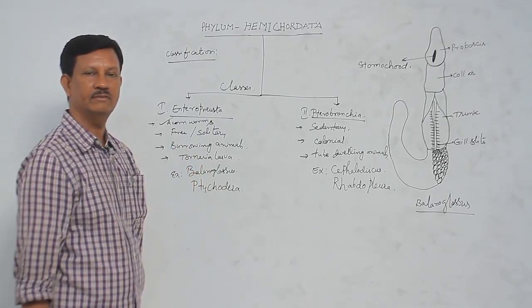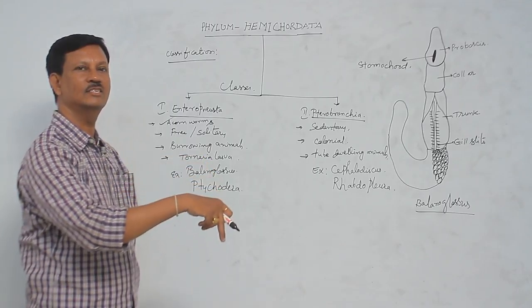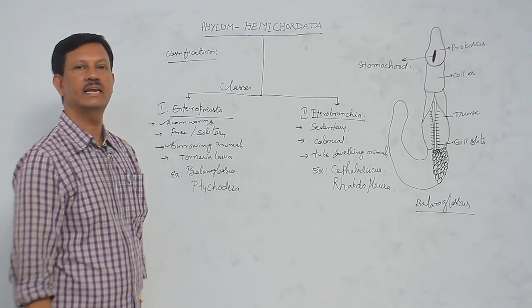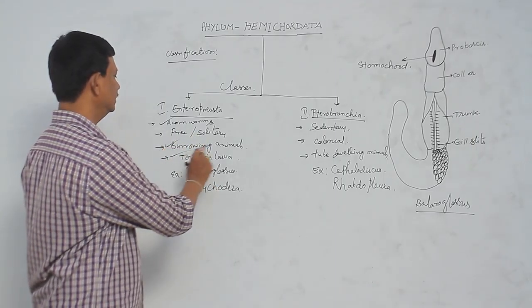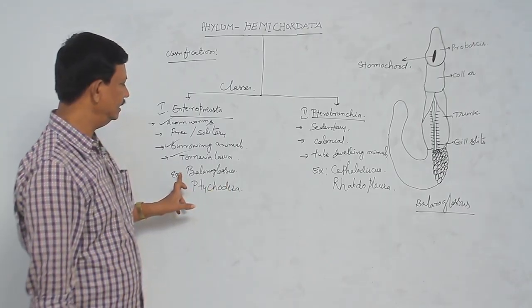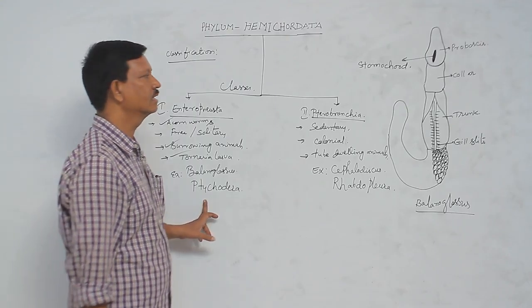They are found in the marine water near to the seashore. They dig the soil and enter into burrows. That is why they are known as the burrowing animals. In the life history, tornaria larva is present. And examples are the Balanoglossus and Ptychodera. These are the two examples that come under this class.